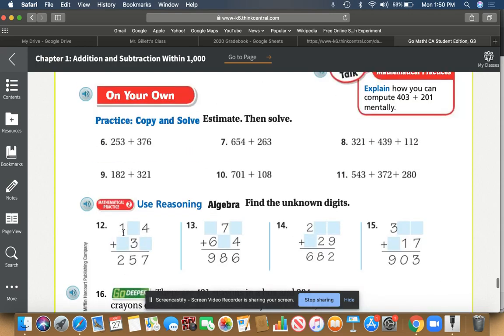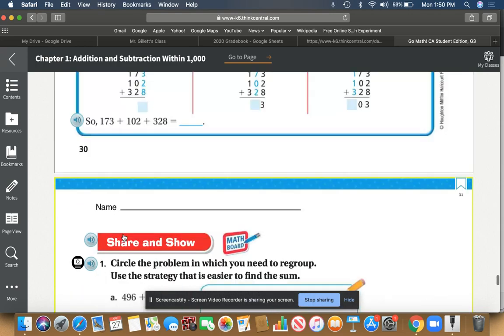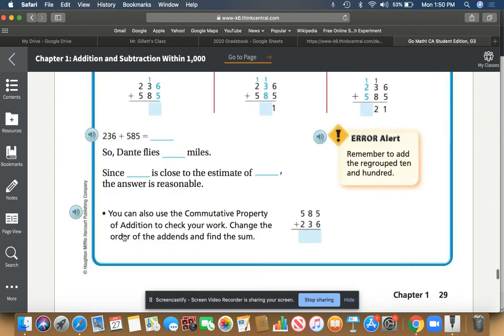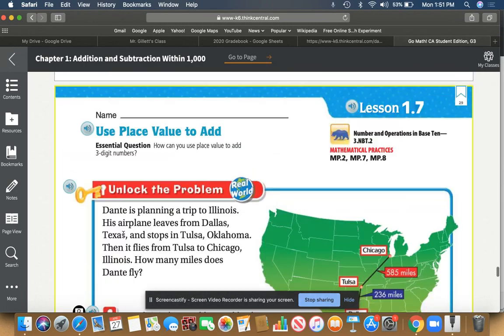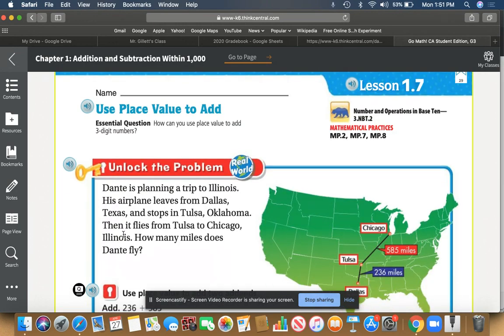What's up, guys? Welcome to 5-Minute Math. In today's episode, we're going to be talking about Lesson 1.7. If you guys look at the title for this one, it says, Use Place Value to Add.